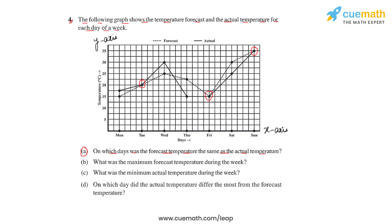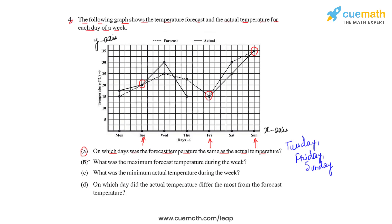Observing the x-axis at those three intersection points, the three days when the forecast temperature and the actual temperature are the same are: Tuesday, Friday, and Sunday.